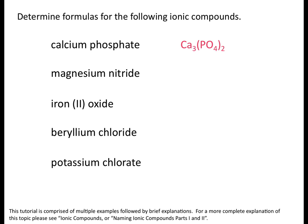Moving to the second example, magnesium nitride: there are a few polyatomic ions that end in -ide, but nitride is not one of them, so your anion is nitrogen the element. Magnesium forms ions with a charge of plus two and nitrogen forms ions with a charge of minus three. Swapping and dropping those charges gives you the formula Mg3N2.